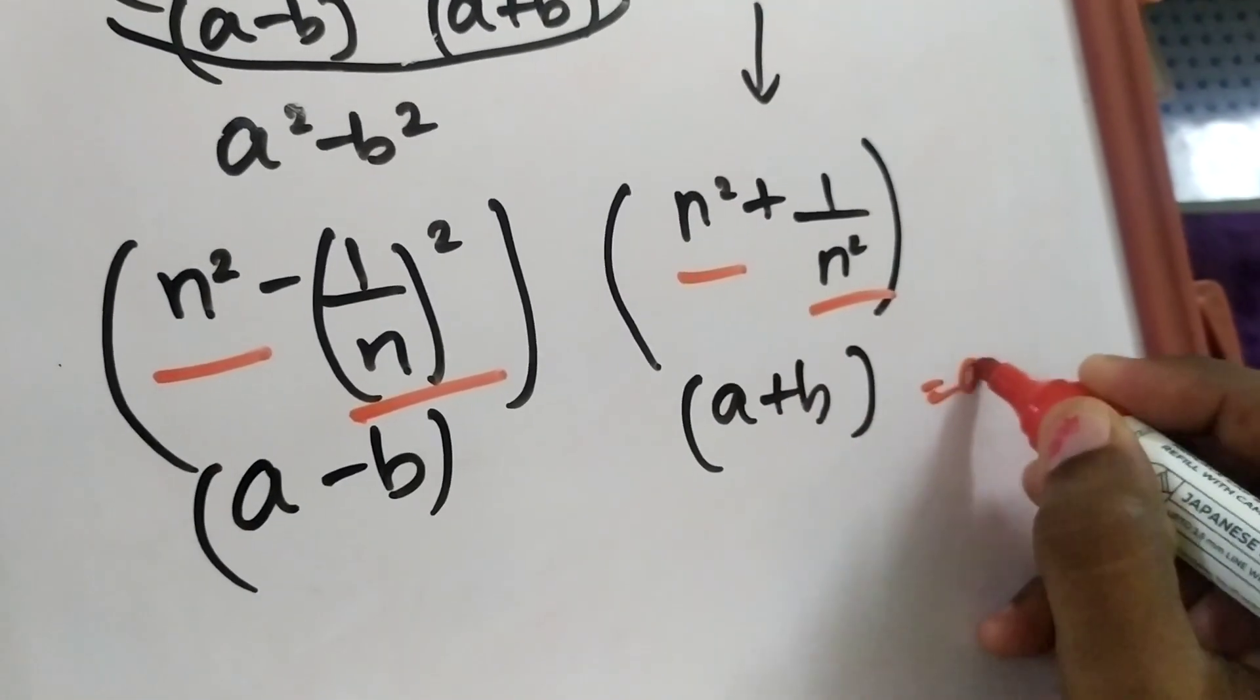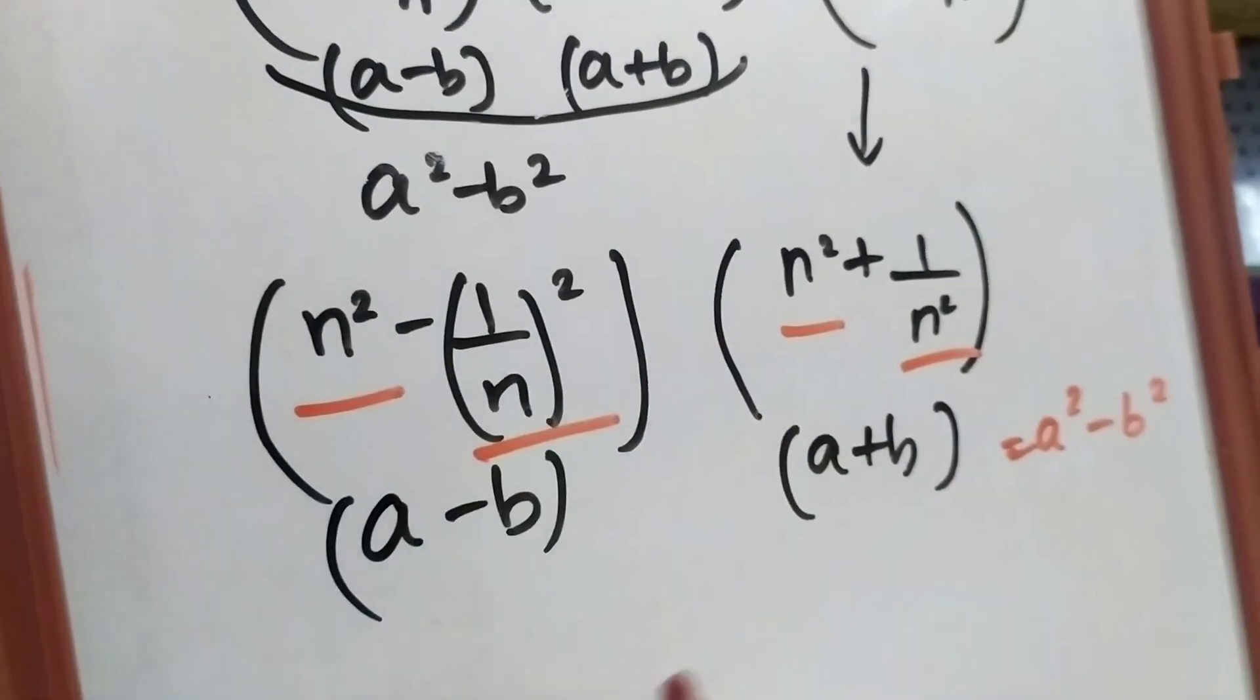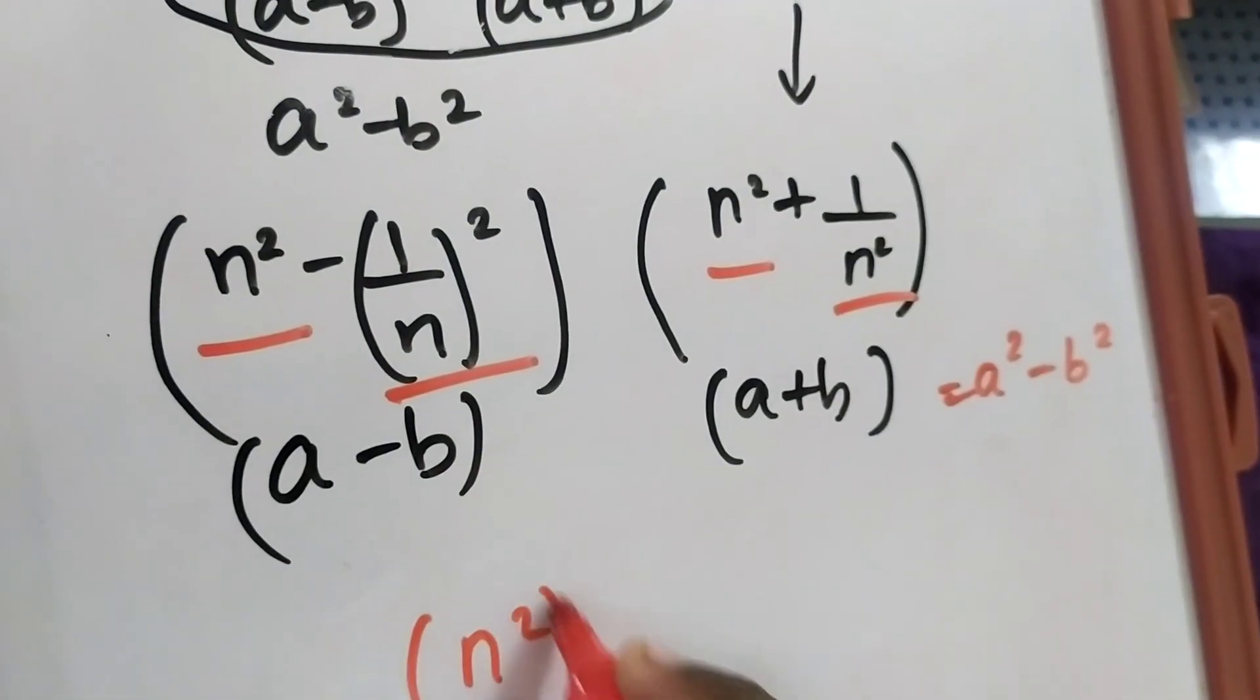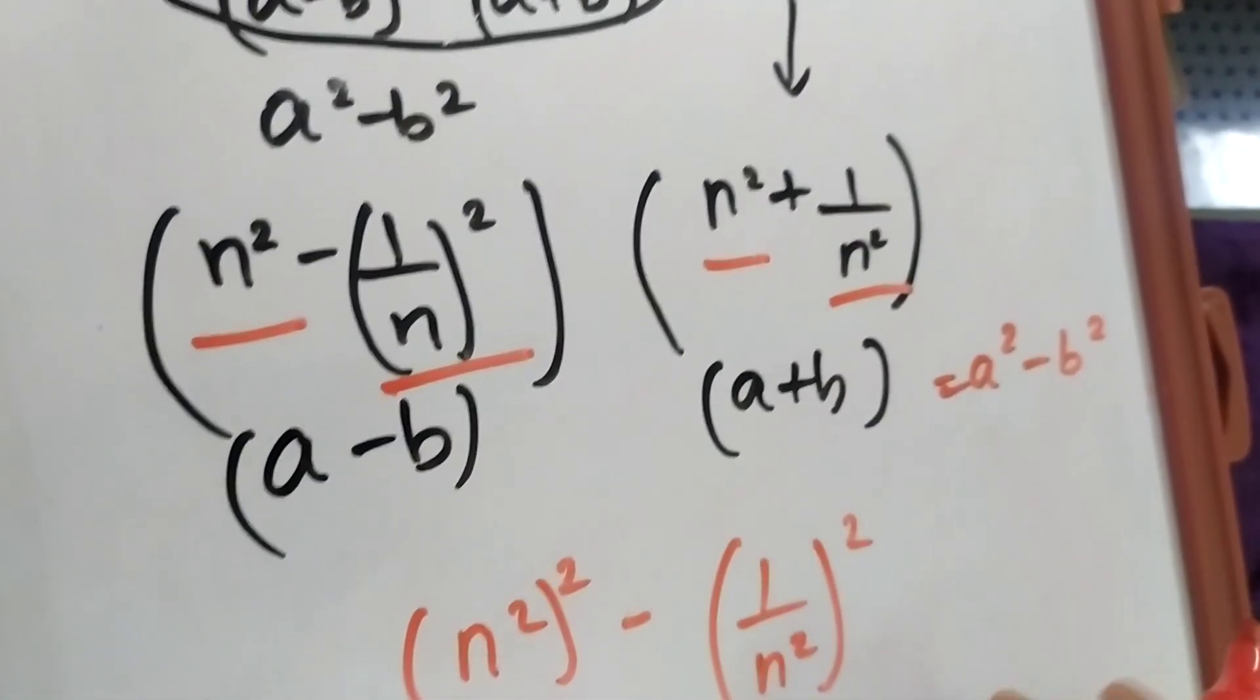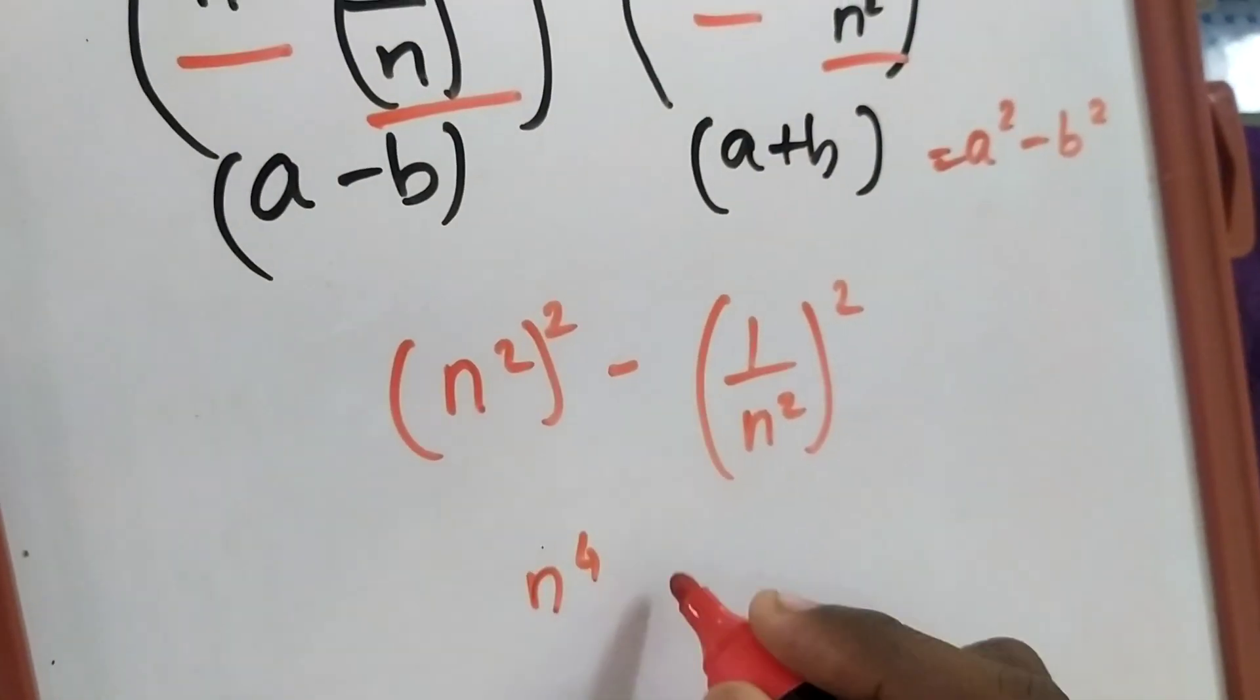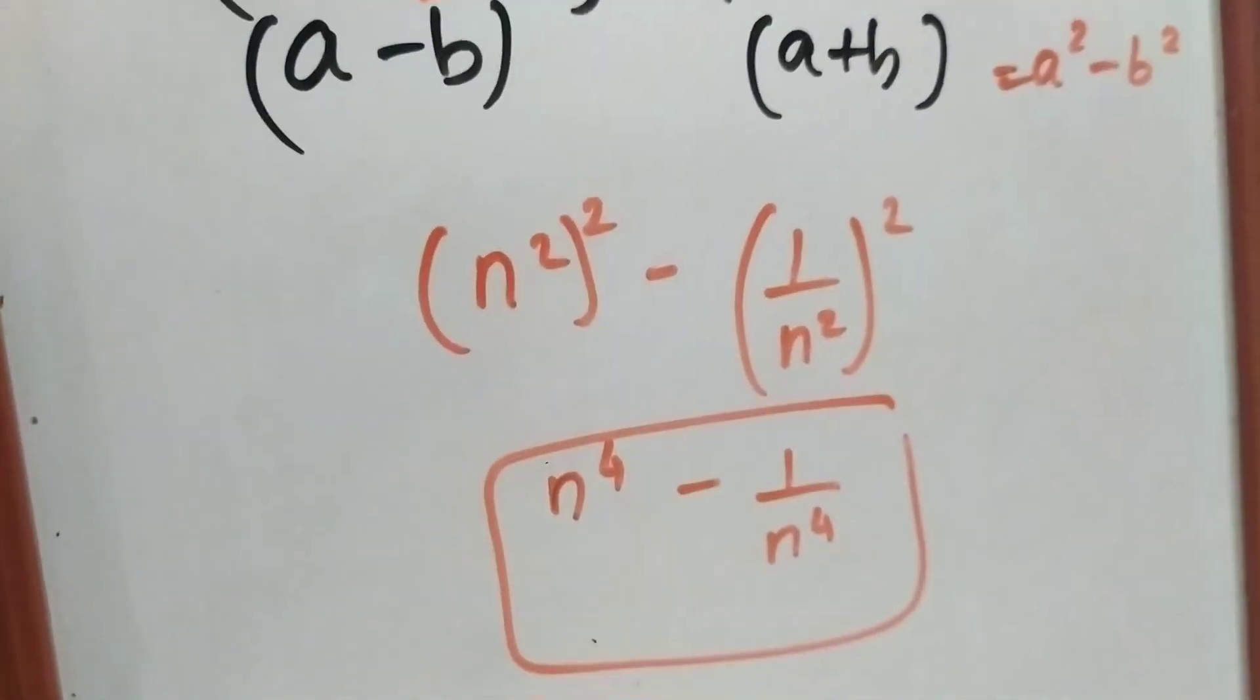So you can write it in the format of a square minus b square. So if you are doing this, n square to the whole square minus 1 by n square to the whole square will come. If you square, you will get n power 4 minus 1 by n power 4.